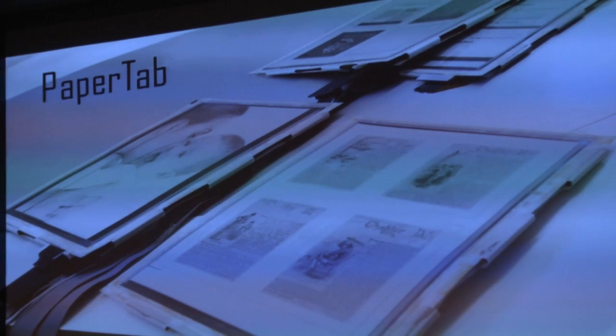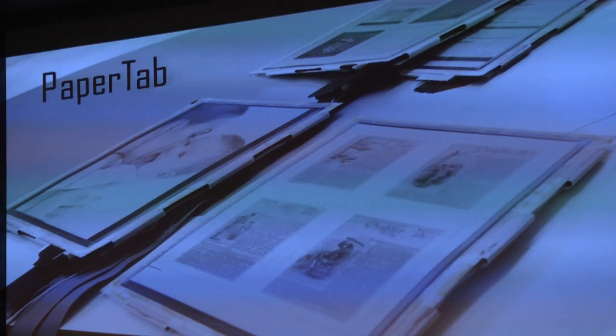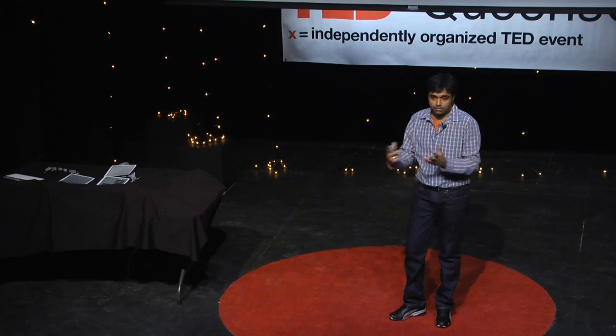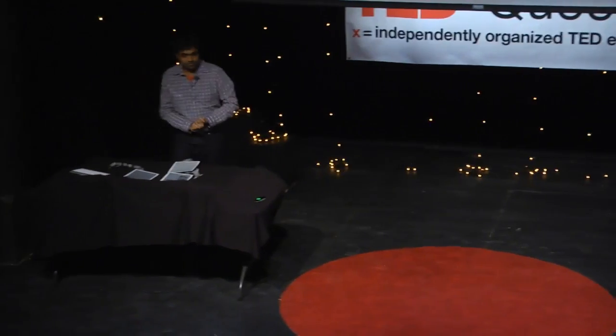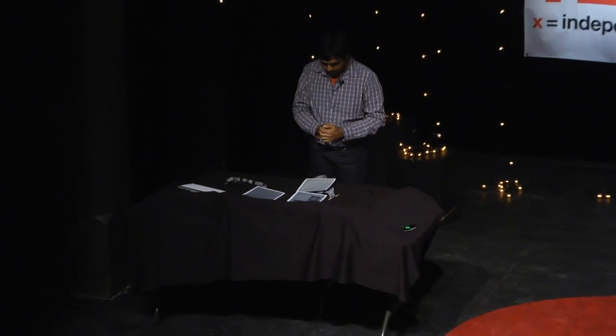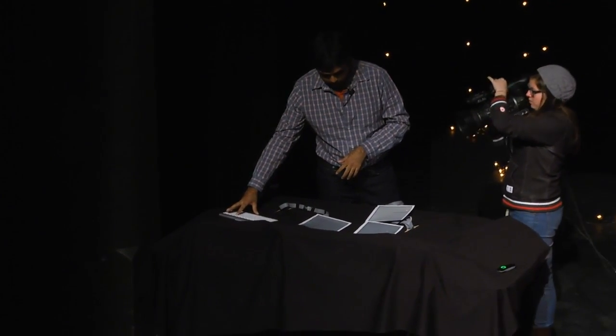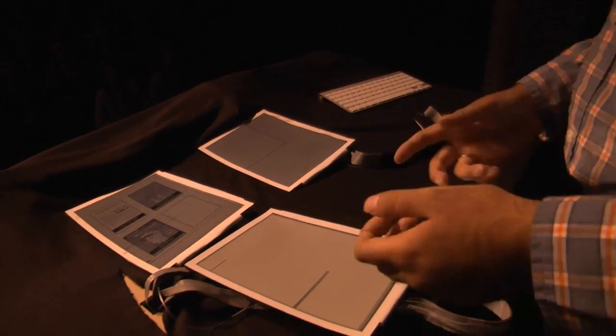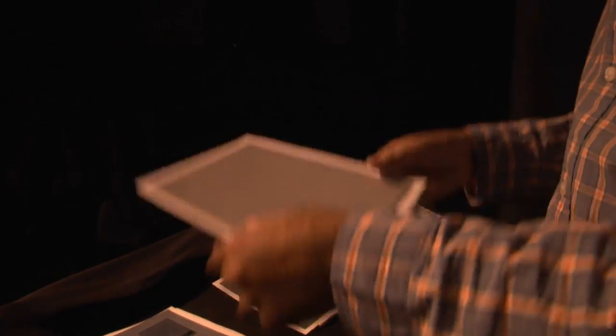PaperTab is a paper computer which has multiple large thin-film flexible displays. Again, these displays have sensors attached to them so that they can sense each other as well as sense the user. What I have here is three sheets of paper. Let me just say sheets of paper because they are thin, they are lightweight, and I would argue you can't do something like this with your iPad.